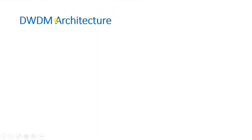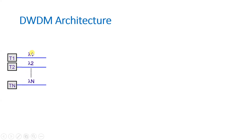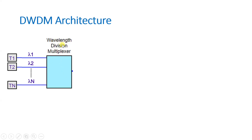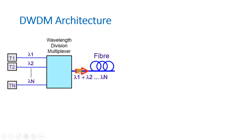To understand DWDM architecture step by step: if you have transmitters T1 to Tn, each transmitter is assigned an individual wavelength — lambda 1 to lambda n. Those wavelengths are first combined by a multiplexer, which combines all wavelengths from different transmitters and forwards them on the fiber. On this fiber, lambda 1 to lambda n wavelengths are present as a composite signal.